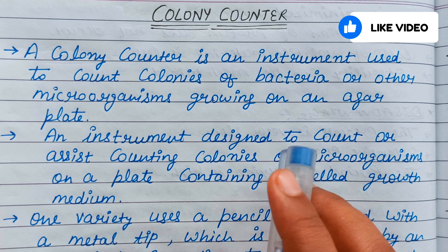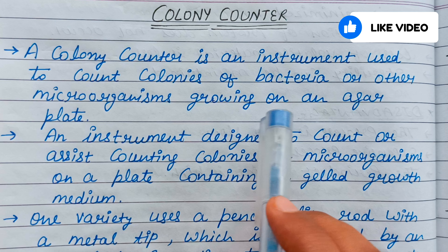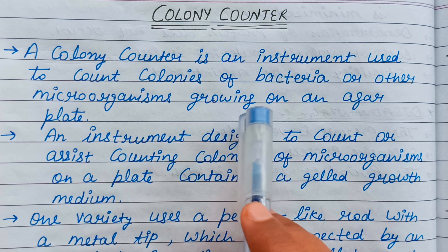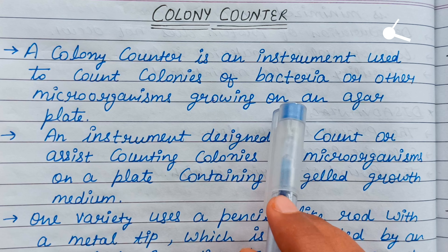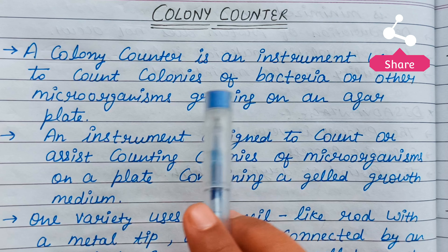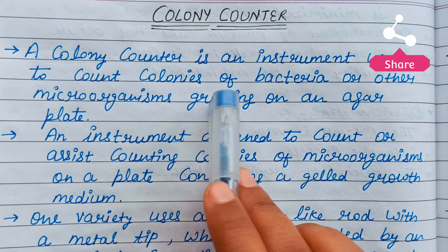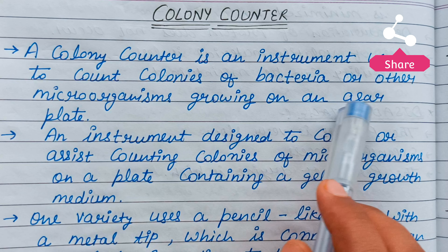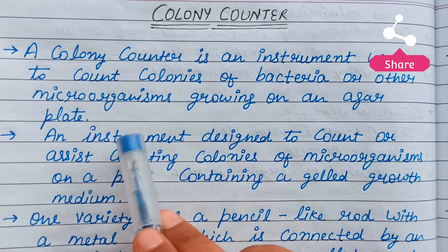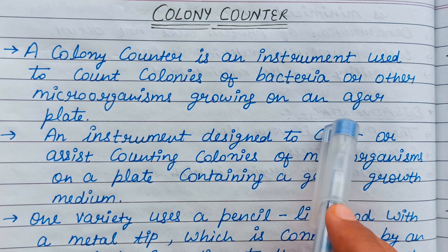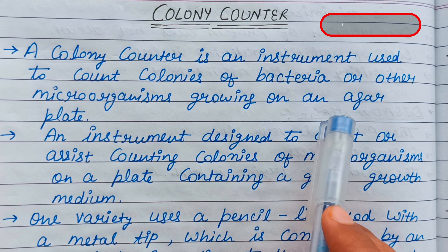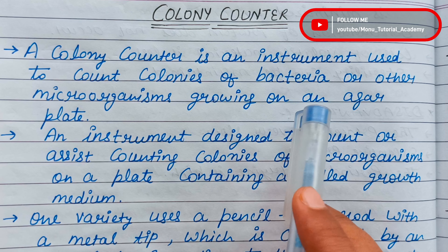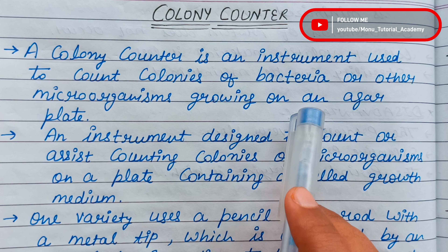Colony counter is an instrument used to count the colonies of bacteria and other microorganisms. In the agar plate, any colonies or bacteria can be counted easily.